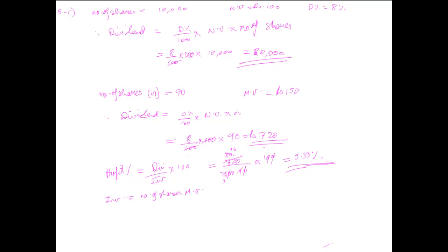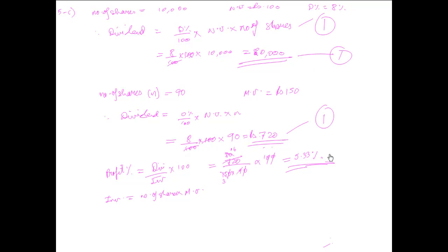A sum like this, worth four marks, is marked as follows: one mark for all the formulae combined, one mark for the first answer (₹80,000), one mark for the second answer (₹720), and one mark for the third answer (5.33%). That's four marks total for this part.